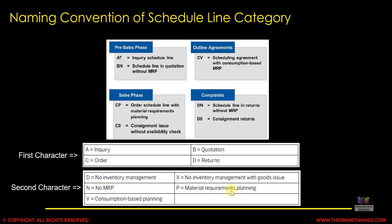The second character indicates the planning type. For example, T stands for no inventory management, and N stands for no MRP. P stands for material requirement planning, meaning it's relevant for MRP. So CN or DN — anything ending with N — means no MRP is linked. V means consumption-based planning, which is part of MRP, and X means no inventory management with goods issue.